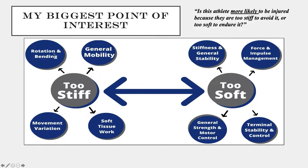For athletes who are too stiff, we want to emphasize rotation and bending, global general mobility, some soft tissue work, and a lot of movement variation to get them moving in different planes. On the opposite end, for athletes who are too soft, we're going to look at stiffness and stability, force and impulse management, terminal stability and control, and general strength and motor control. There's still a ton of overlap, but each group gets more emphasis on their respective qualities.